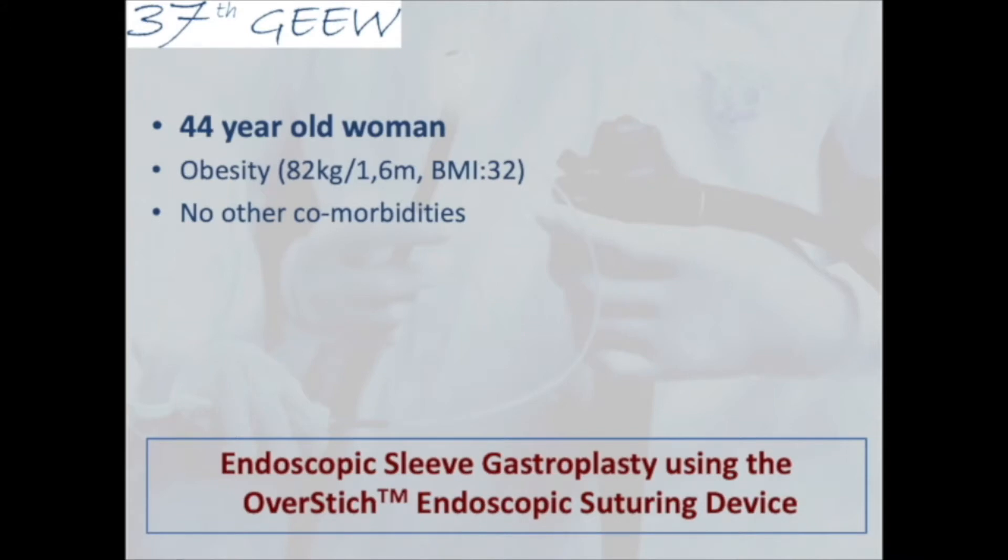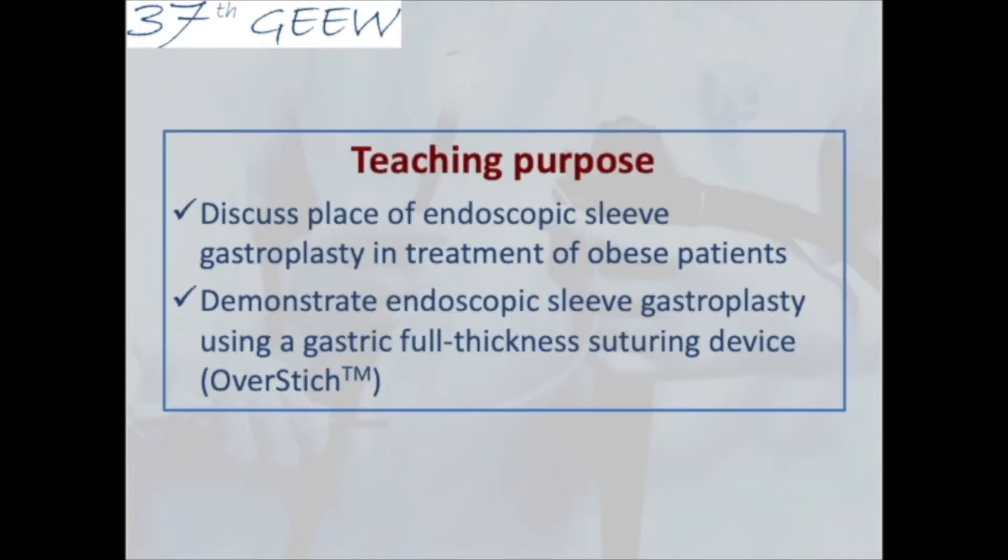The next case is a 44-year-old woman who presented with obesity with a BMI of 32. She has no other comorbidities and she's scheduled today for an endoscopic sleeve gastroplasty with the Overstitch full thickness suturing system. We shall join now Dr. Bokowski and Dr. Ibrahim for the procedure.